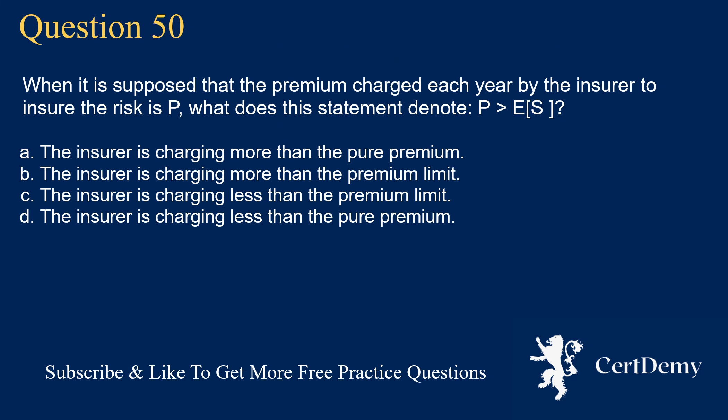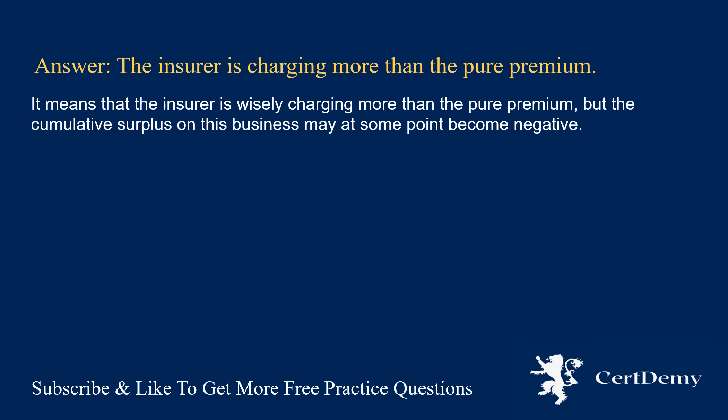Question 50. When the premium charged each year by the insurer is P, what does the statement P greater than E(S) denote? Options: the insurer is charging more than the pure premium; the insurer is charging more than the premium limit; the insurer is charging less than the premium limit; the insurer is charging less than the pure premium. The answer is: the insurer is charging more than the pure premium. This means the insurer is wisely charging more than the pure premium, but the cumulative surplus on this business may at some point become negative.